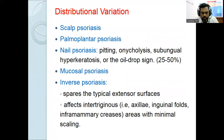Based on site, psoriasis is classified into scalp psoriasis, sebo-psoriasis, mucosal psoriasis (oral and genital), palmoplantar psoriasis, nail psoriasis, and inverse or flexural psoriasis. In scalp psoriasis, there are solitary or multiple discrete erythematous scaly plaques seen over the scalp, extending beyond the hair margins and over the retroauricular region. This extension is typical of scalp psoriasis.